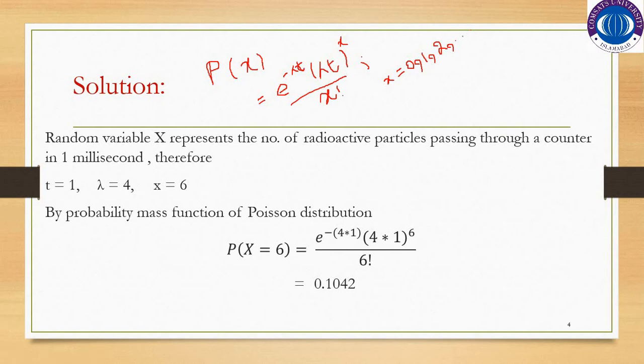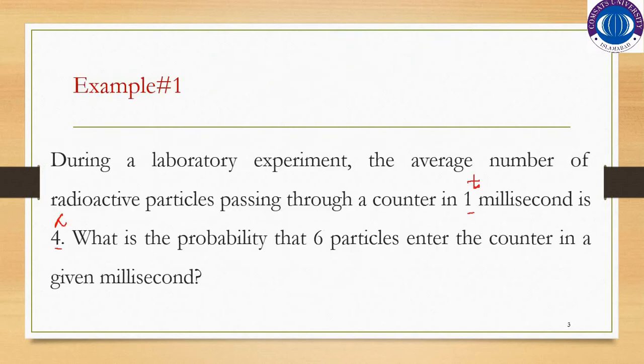The random variable x represents the number of radioactive particles passing through a counter in one millisecond. Since the time span is fixed, by using the Poisson distribution we can say that t equals one, lambda equals four, and x equals six, as they are asking what is the probability that six particles enter the counter in a given millisecond.